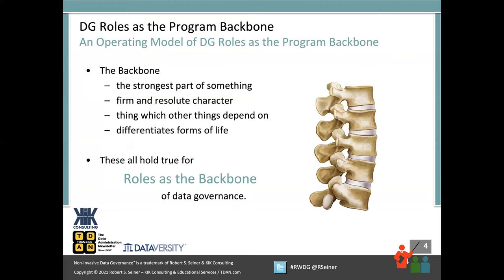If we start by talking about data governance roles as the backbone, I did a quick search on the definition of a backbone. What I found is that there were a lot of statements about the backbone really being the strongest part of something. With a data governance program, the roles and responsibilities are going to be involved in the processes you're governing and the data you're governing. The communications and tools are really going to depend on which level of people — which roles — you've defined for your program. This really becomes the backbone of all the different moving components of a successful data governance program.